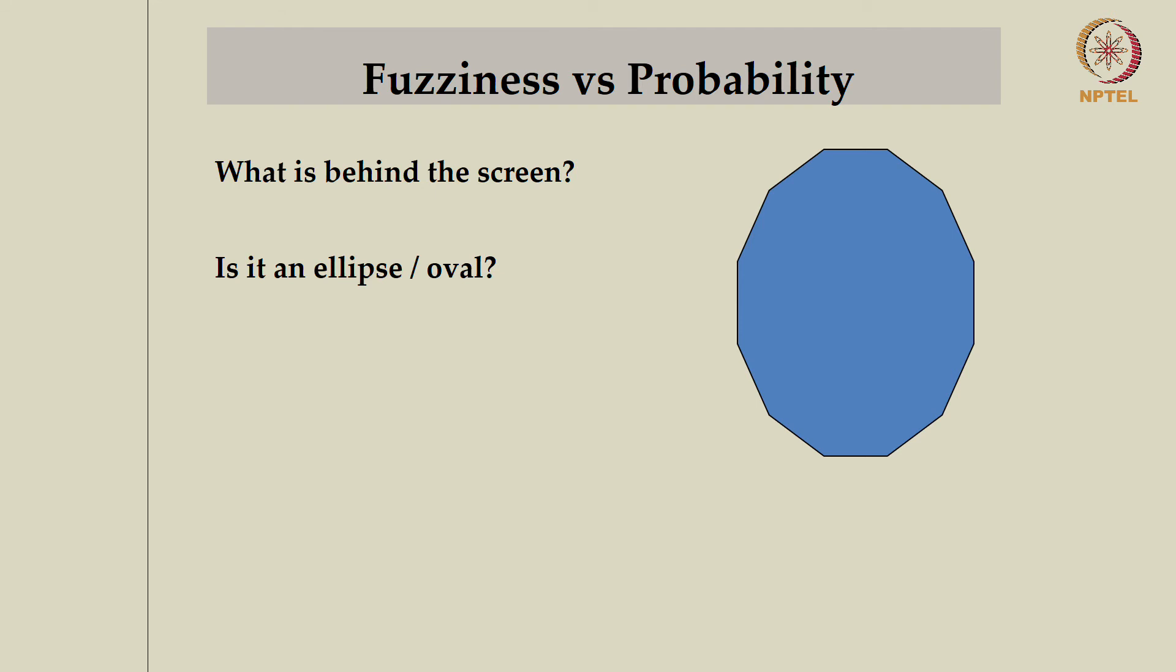Now, the question is, is it an ellipse or an oval? Clearly, you would say that it is neither an ellipse nor an oval. But you would perhaps say it is more or less an ellipse or perhaps a fuzzy ellipse or a fuzzy oval. In probability, due to lack of information, we are making a guessing game as to what could be hidden behind the screen. Without the full information, we are trying to decide whether that object belongs to the class of heptagons or pentagons or one such regular geometric figure.